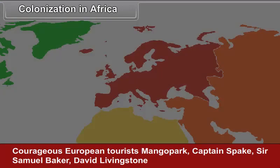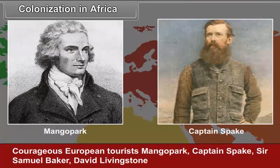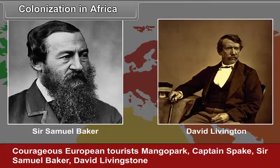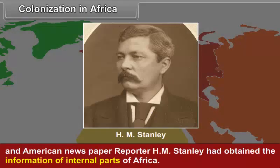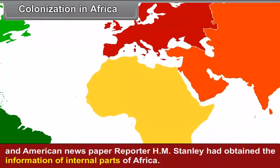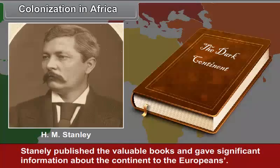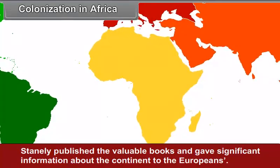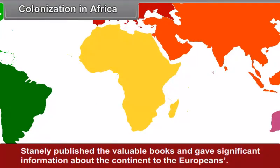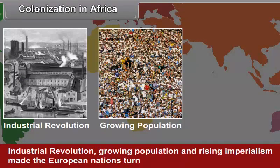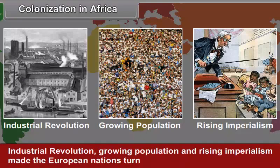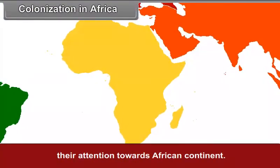Colonization in Africa. Courageous European explorers — Mungo Park, Captain Speke, Sir Samuel Baker, David Livingstone, and American newspaper reporter H. M. Stanley — had obtained information about the internal parts of Africa. Stanley published valuable books and gave significant information about the continent to the Europeans. Industrial Revolution, growing population and rising imperialism made the European nations turn their attention towards the African continent.